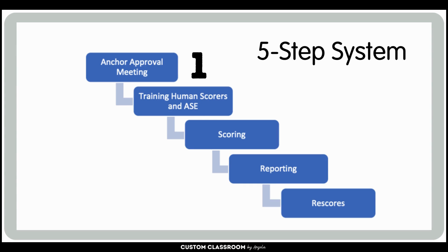In the beginning, step one, an anchor approval meeting happened where a group of student responses were scored using the TEA-approved rubrics to establish scoring boundaries. These anchor responses exemplify each score point and are identified during meetings. Items set for practice and qualification are created based on these responses.